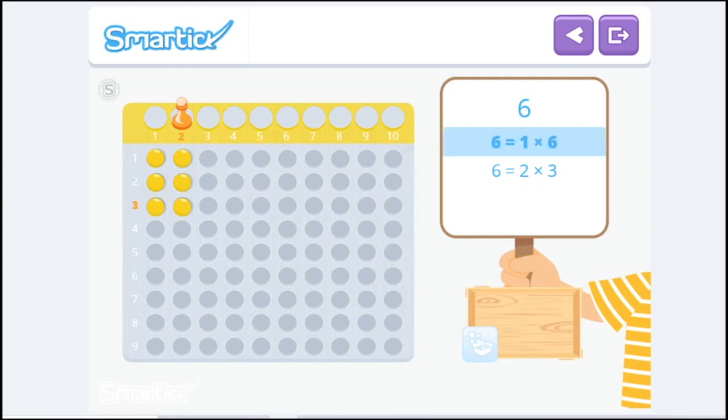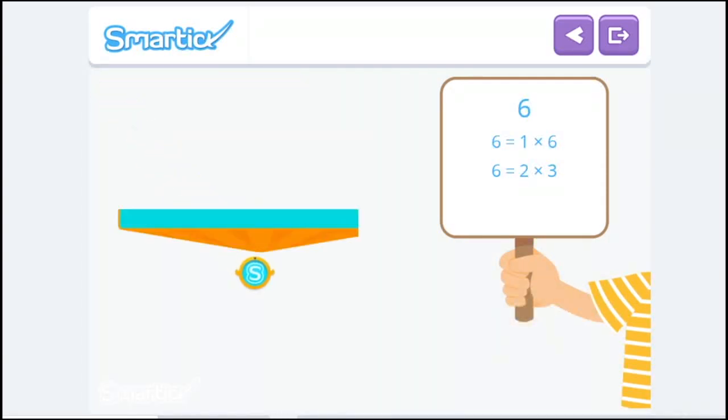Otto has factorized 6 into 1 multiplied by 6 and 2 multiplied by 3. We can see that factorizing a number is the same as decomposing a multiplication. It's called factorizing because the numbers that make up a multiplication are the factors of the multiplication. The factors of the number 6 are 1 and 6, 2 and 3.